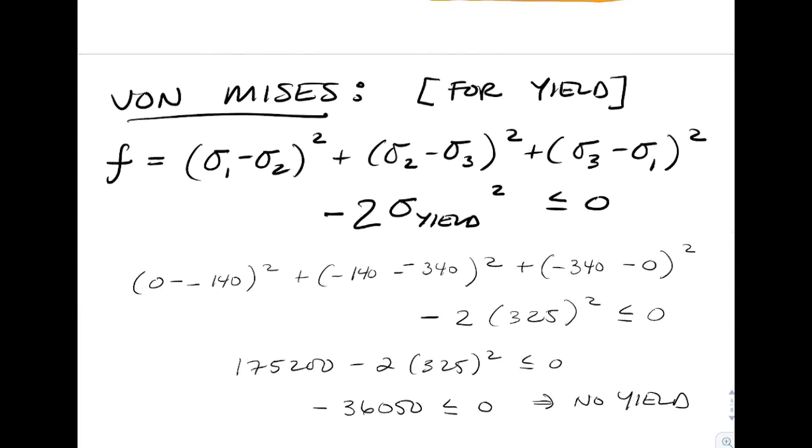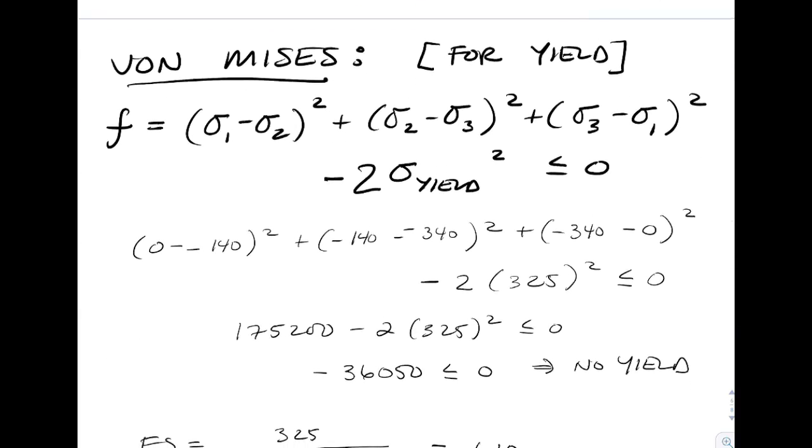Von Mises, we have the exact same formula from before. The only thing that's changed is sigma 2 and sigma 3. See those values in there? Being careful with your calculator, instead of 140,000, now 175,200, and subtracting twice sigma yield squared.